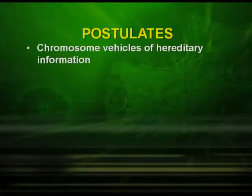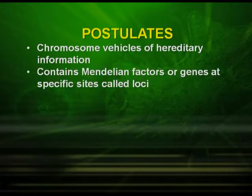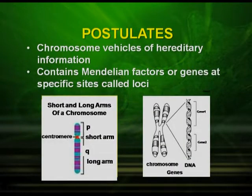Now let us see what are the important points of the Chromosomal Theory of Inheritance. The chromosomes are the vehicles of hereditary information. They contain Mendelian factors or genes at specific sites called loci. As you can see in the picture, the specific sites are there on the chromosomes where the genes are located.